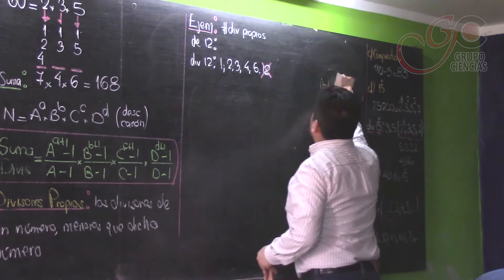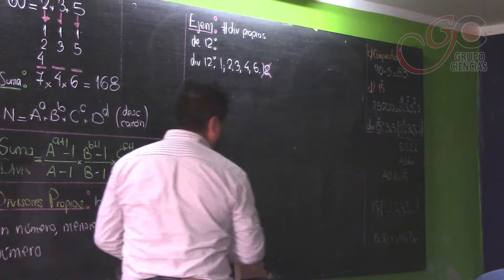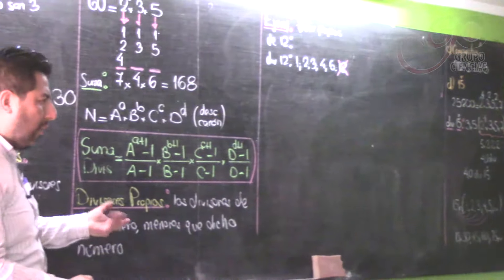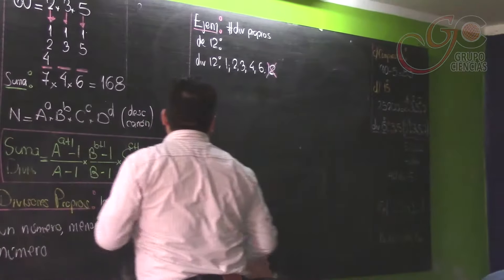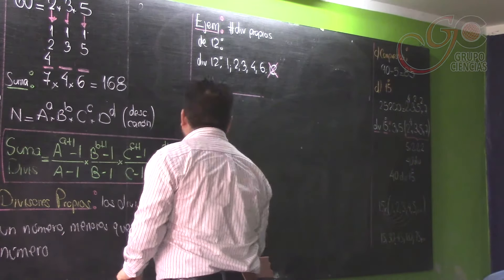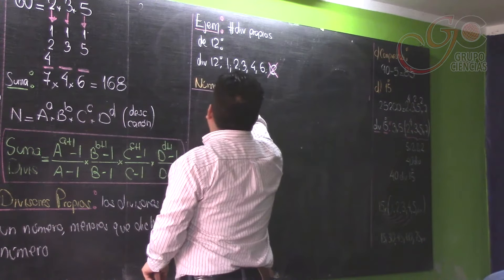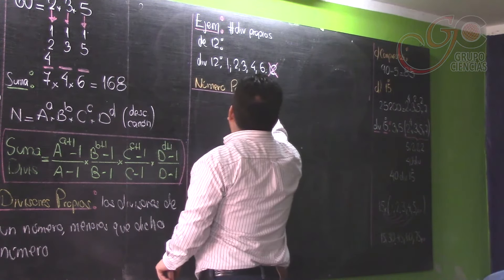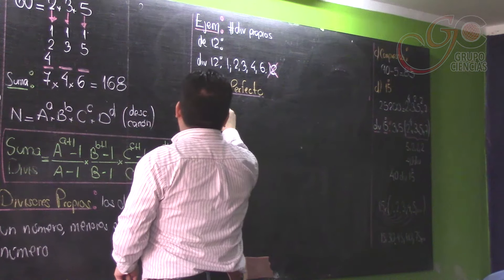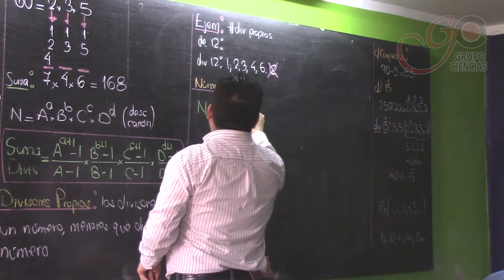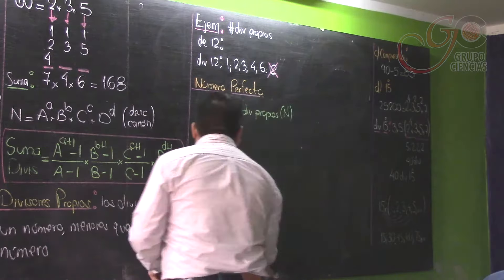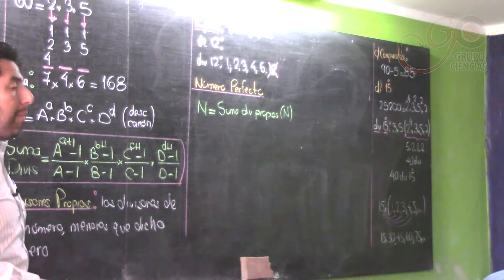Hay unos conceptos teóricos también. Número perfecto: ¿alguien sabe qué es un número perfecto? Llamamos número perfecto a aquel número que sea igual a la suma de sus divisores propios. Todo aquel número que sea igual a la suma de sus divisores propios se llama número perfecto.